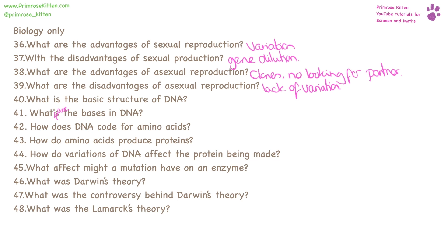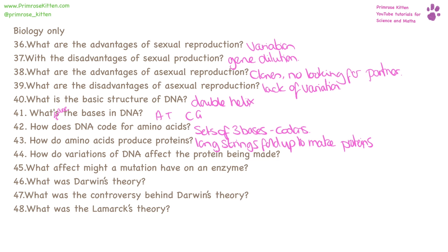The basic structure of DNA is a double helix. The bases in DNA are A together with T, and C together with G. DNA codes for amino acids by sets of three bases, which are triplet codons. Long strings of amino acids fold up together to make proteins. Variations within the DNA can affect the amino acids selected for the protein, which means the protein might misfold and might not work properly — for example, in an enzyme, the active site might be the wrong shape.